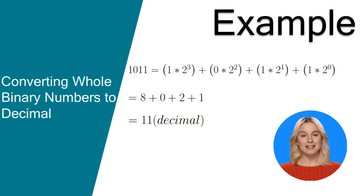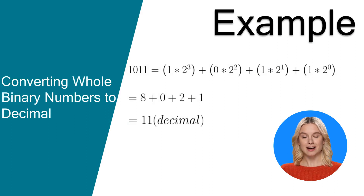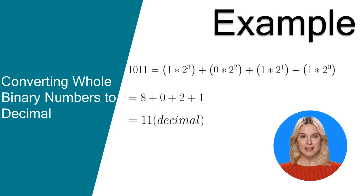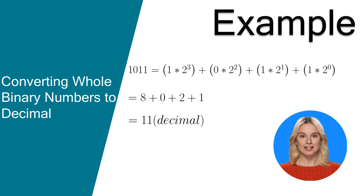For this example, we have the binary number 1011. 1011 in binary is 1 times 2 cubed plus 0 times 2 squared plus 1 times 2 to the power of 1 plus 1 times 2 to the power of 0. That equals 8 plus 0 plus 2 plus 1, and finally 11 in decimal.